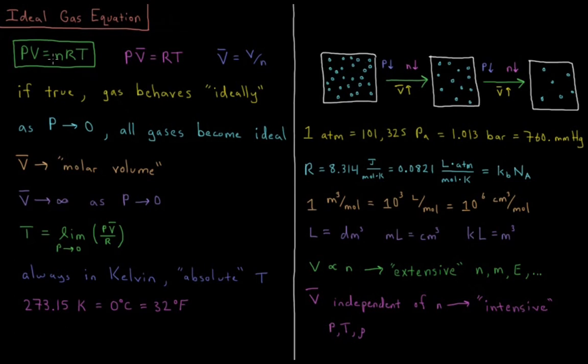So that's our ideal gas equation, PV equals nRT. A gas is ideal if it obeys that equation. All gases obey that equation at sufficiently dilute pressures. And then we just have to make sure to watch our units for P, for V, for R, and for T.